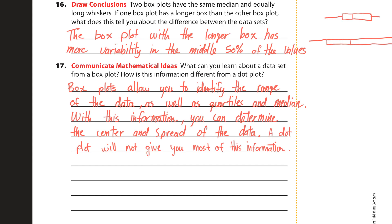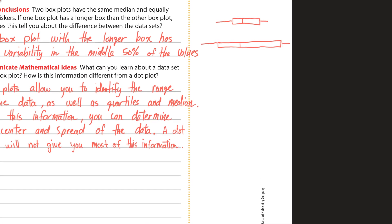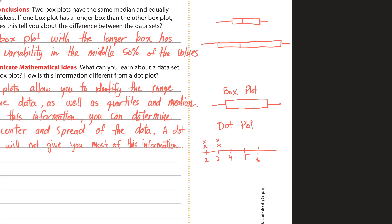A dot plot has a number line with x's or dots placed above it. It's really good for showing the shape of the data and you can find the mode easily. However, a dot plot is not good for finding quartiles, medians, and the variability of the data — most of the summary statistics that a box plot provides.